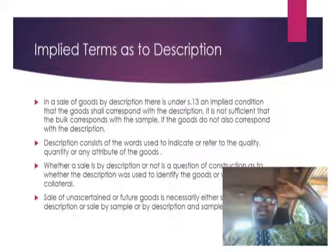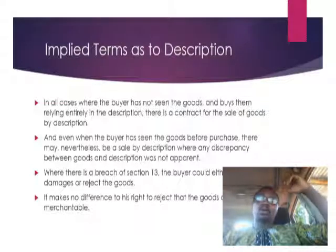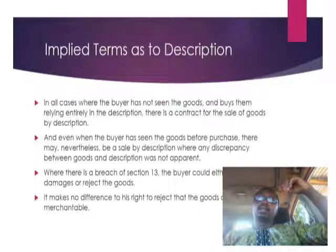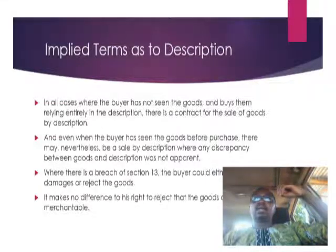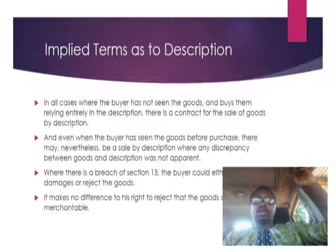There is also the possibility that a seller could sell goods that the buyer has seen, but the sale will still be a sale by description. This occurs where the description is not apparent — where what the seller has described in relation to the quality or attributes of the goods is not something that can be seen apparently on the body of the goods. So it is possible to buy goods which the buyer has seen, but that purchase will still be based on description.